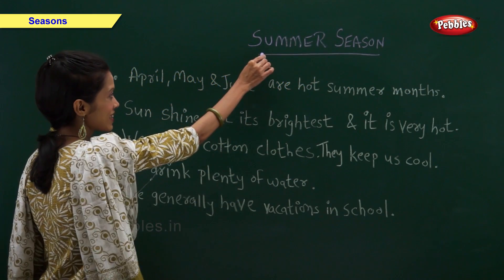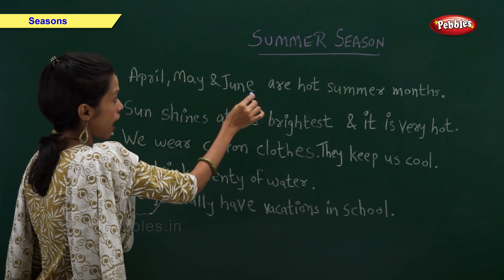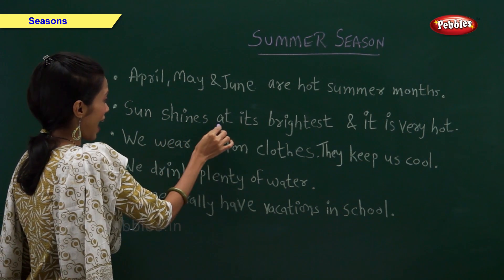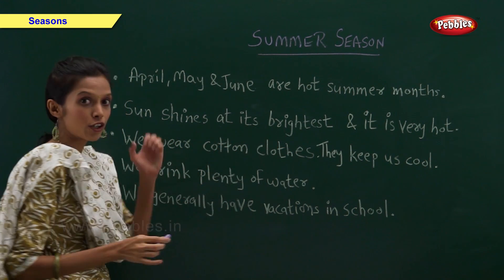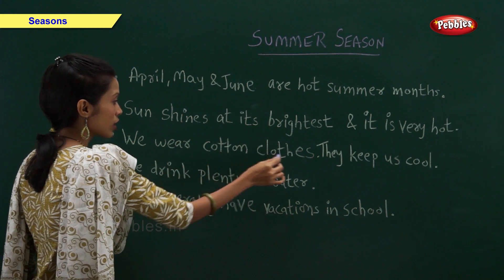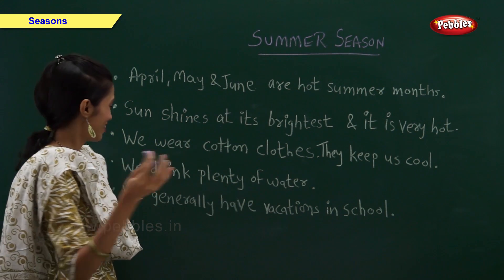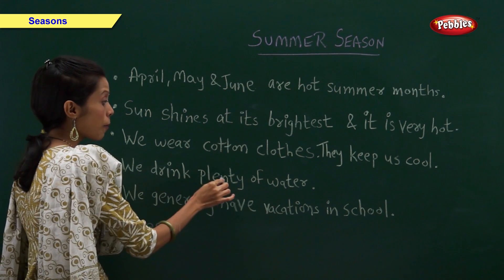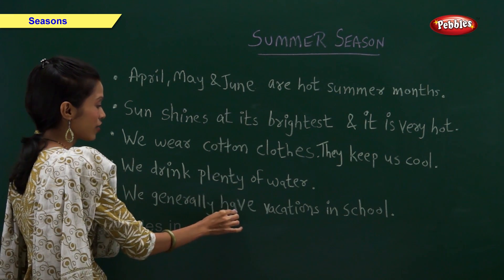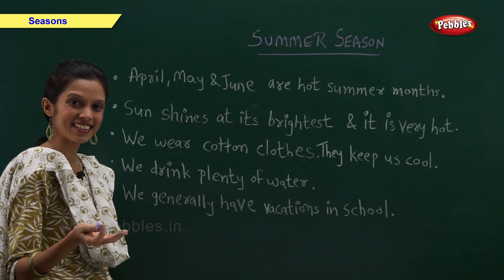Summer season. April, May and June are hot summer months. The sun shines at its brightest and it is very hot. We wear cotton clothes, which keep us cool.